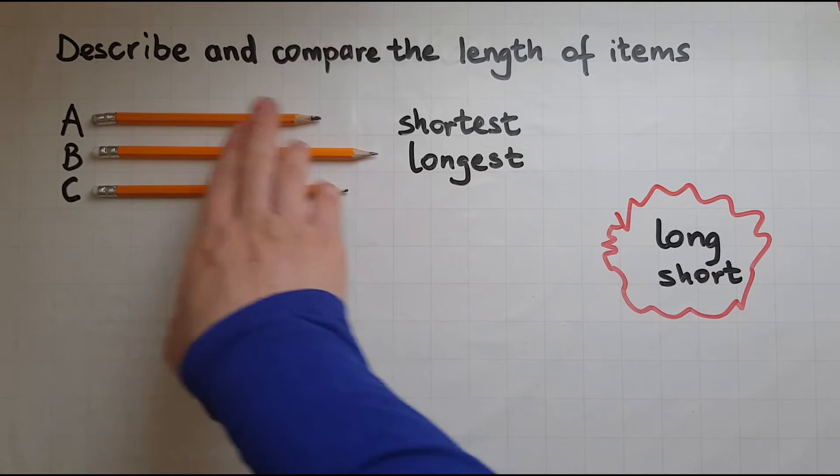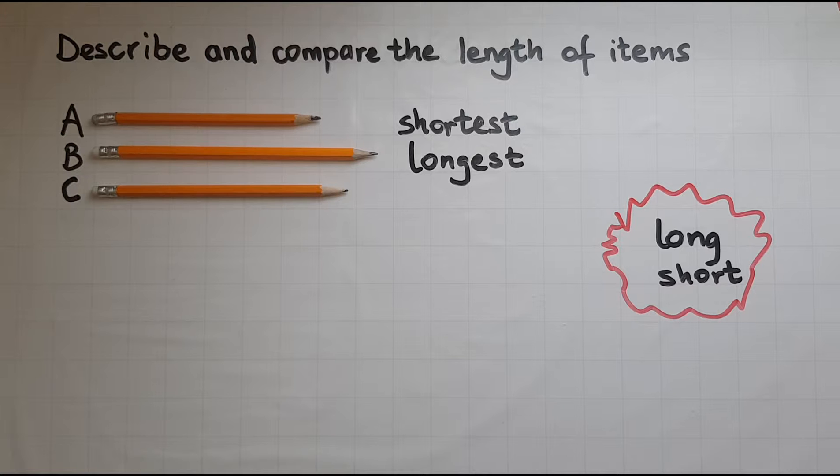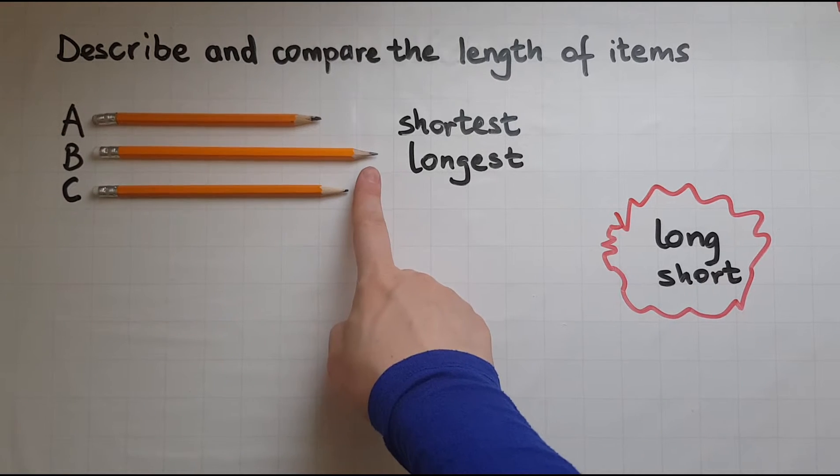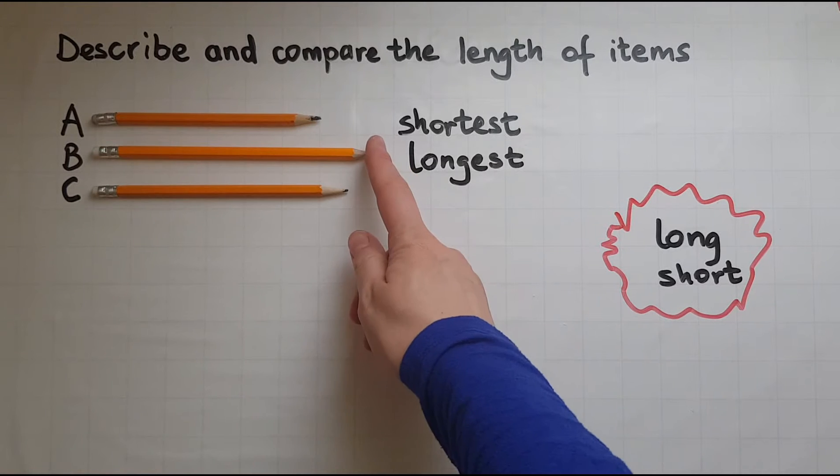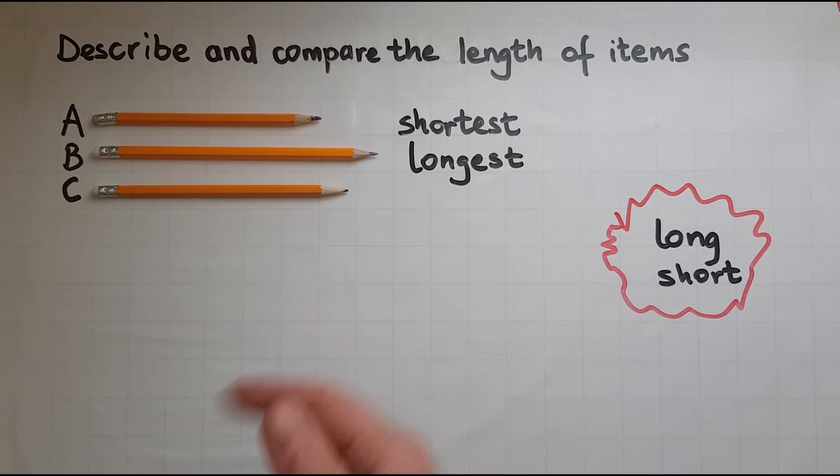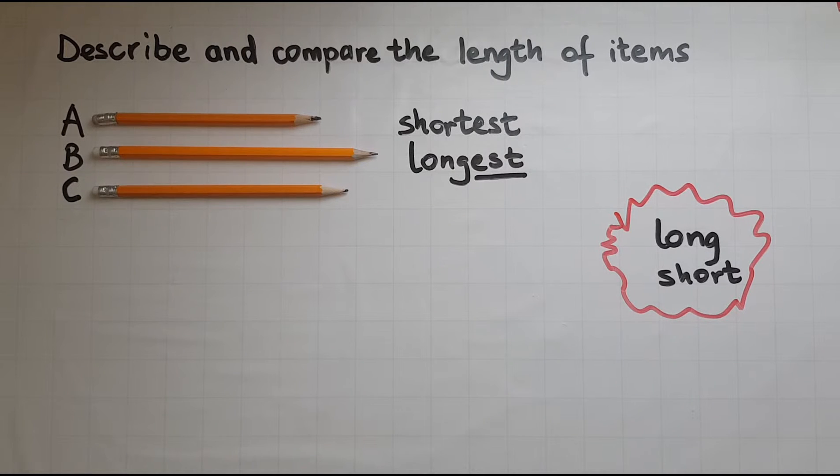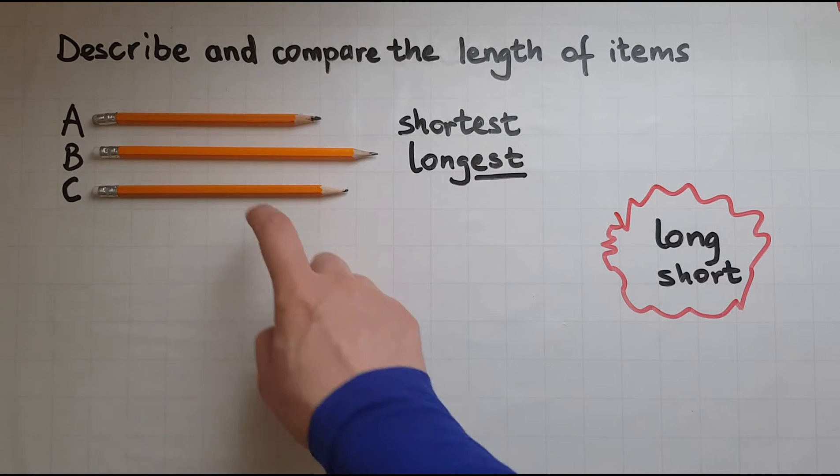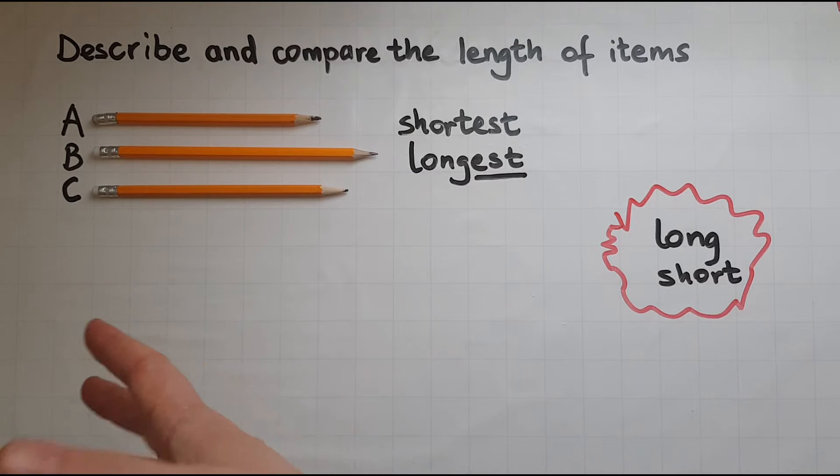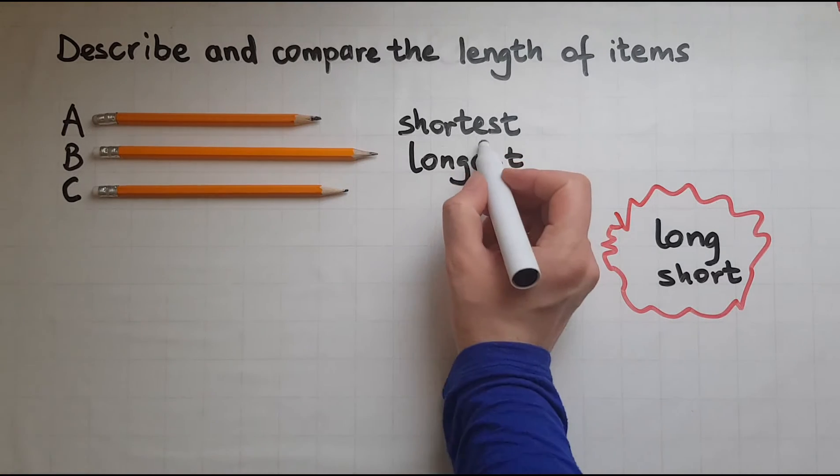When we have three of them or more and we want to find the one that is the longest, so if I am comparing them this is the longest then we write longest. And the one that is the shorter out of all of these we call that the shortest.